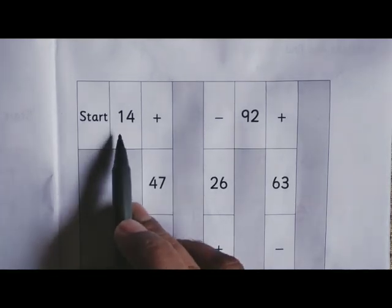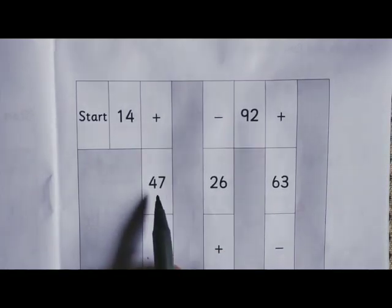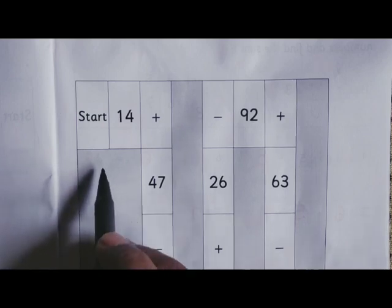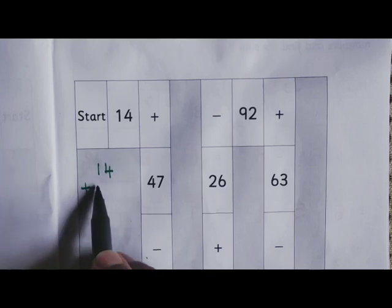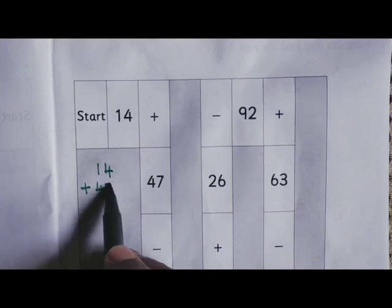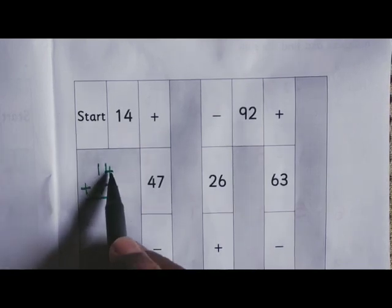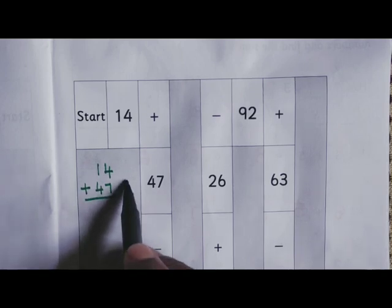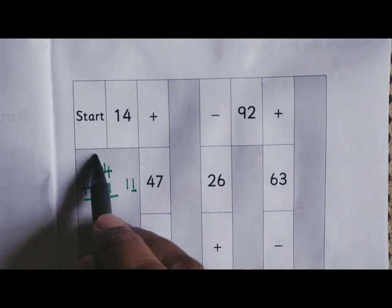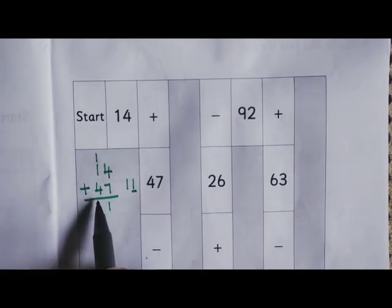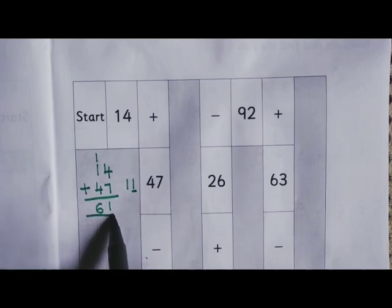Start. 14 plus 47. So let us do the working. 14 plus 47. 4 plus 7 is 11. So you write 1 here and 1 carryover. 1 plus 1 is 2. 2 plus 4 is 6. 61 is the answer.